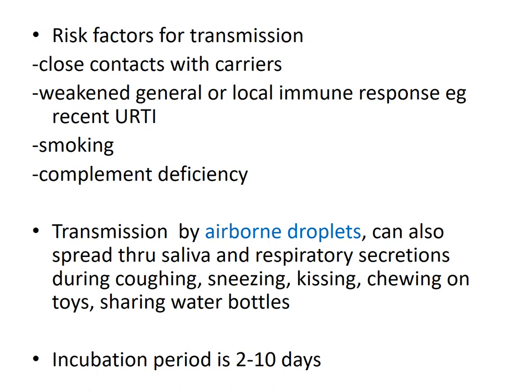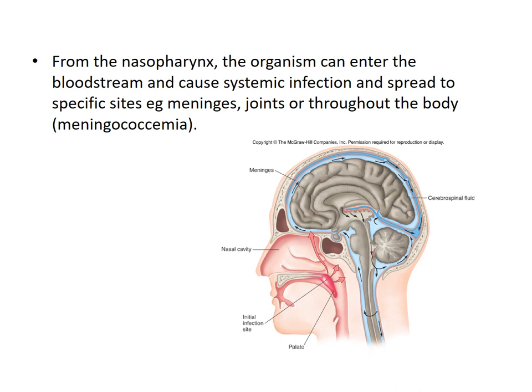Risk factors for transmission include close contact with carriers, a weakened general or local immune response such as a recent upper respiratory tract infection, smoking, and complement deficiency. Transmission from carriers to other individuals is by airborne droplets and can also spread through saliva and respiratory secretions during coughing, sneezing, kissing, chewing on toys between children, or sharing water bottles. The incubation period is 2 to 10 days. From the nasopharynx, the organism can enter the bloodstream and cause systemic infection, spreading to the meninges, joints, or throughout the body once meningococcemia occurs.